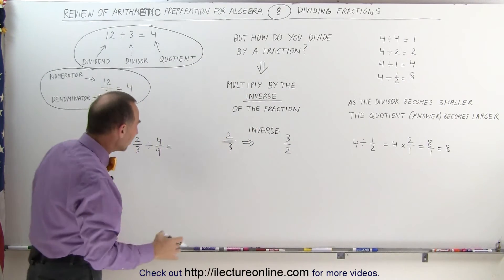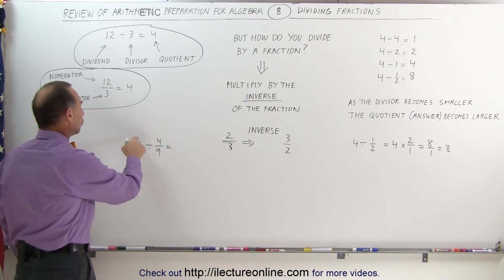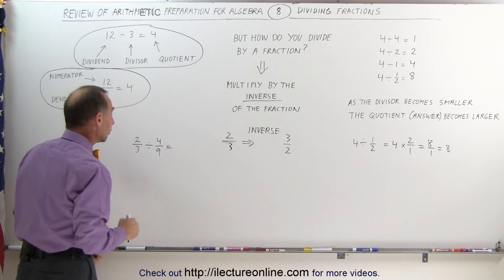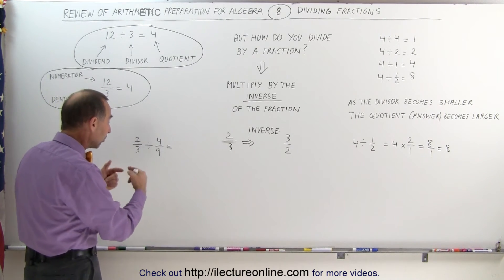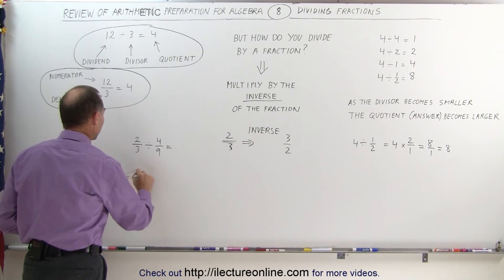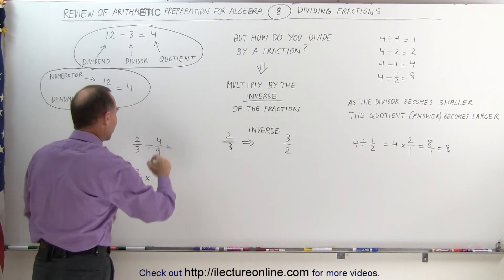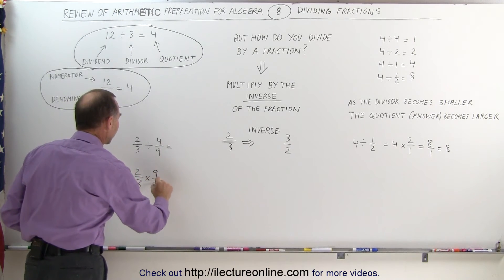So for a more representative example, let's divide 2 thirds by 4 ninths. Again, the way to do that is by multiplying by its inverse, so this becomes the same as 2 thirds multiplying times the inverse of that. Simply flip the fraction around, and get 9 over 4.